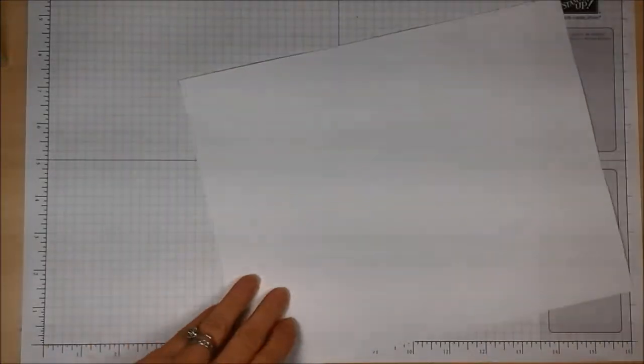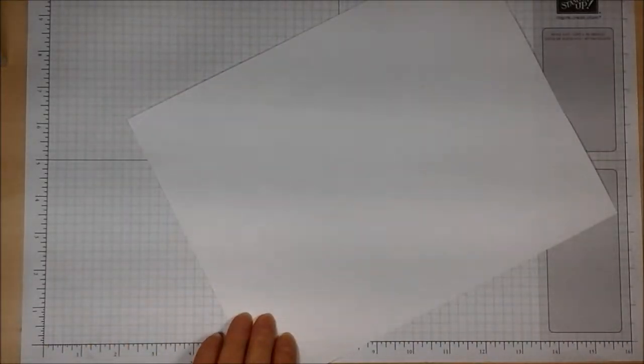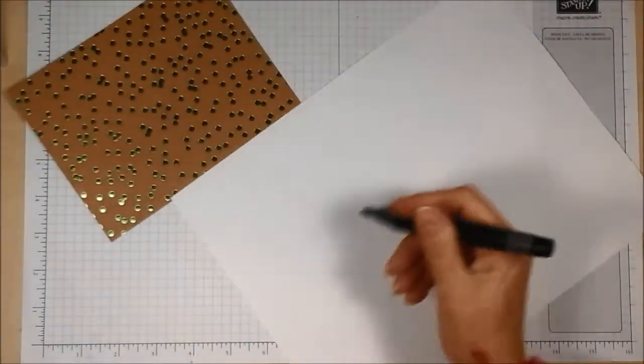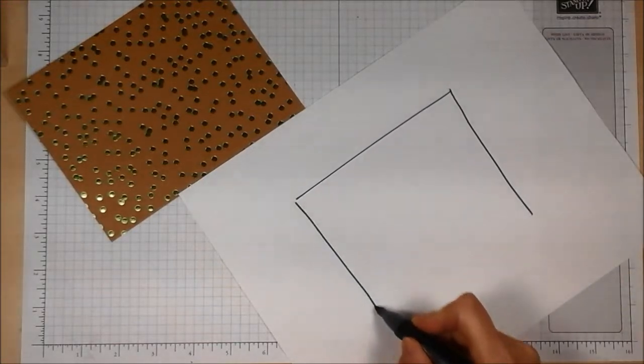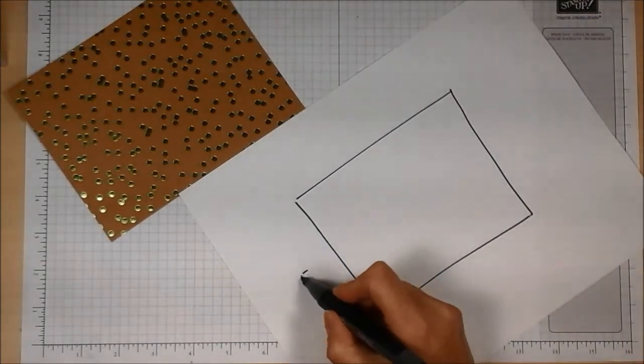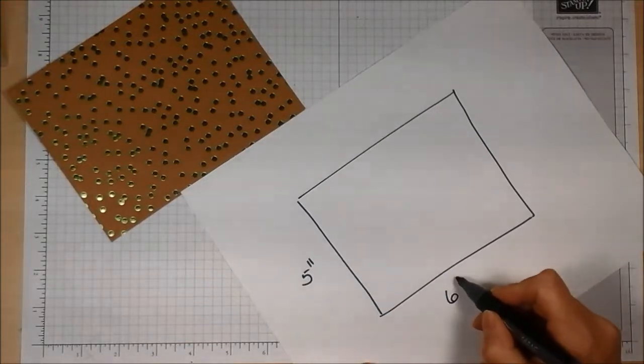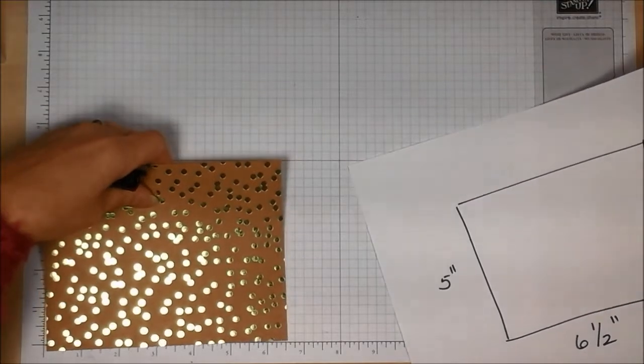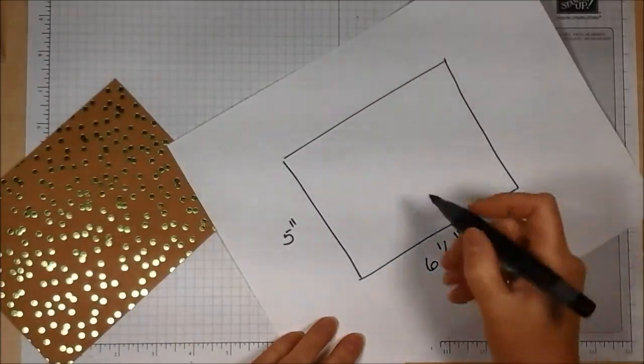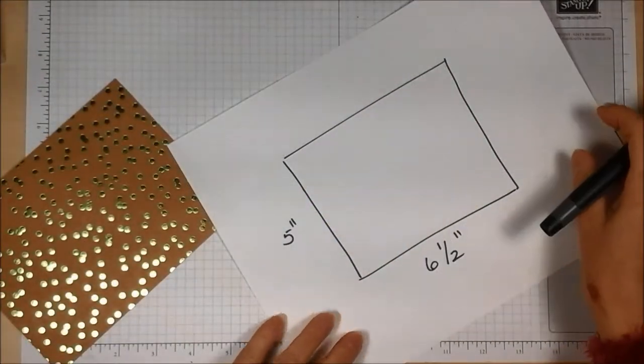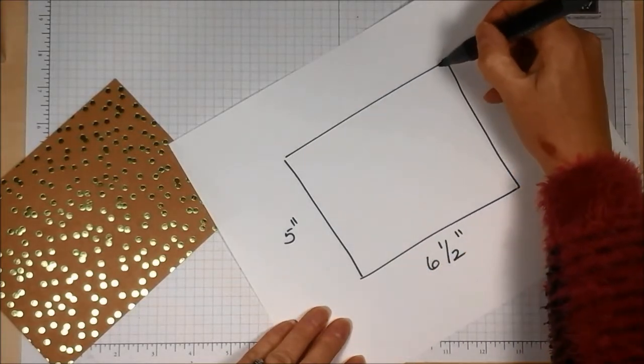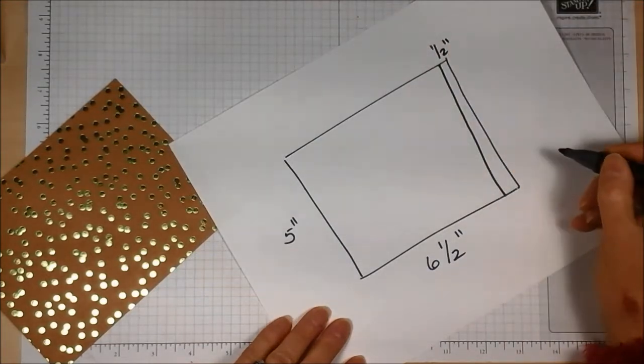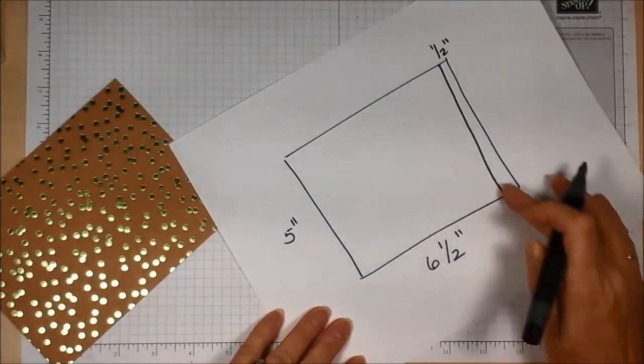So before I start, let me give you a quick diagram of how this is going to work. So basically, I have a piece of card here and it is five inches by six and a half inches. This is the basic piece of card and what I need is six sides. So first of all, I've got a half inch that's going to be my tab.